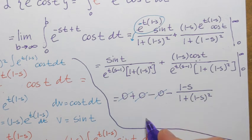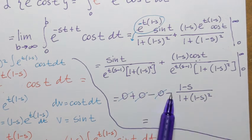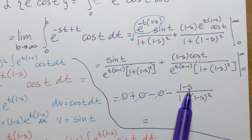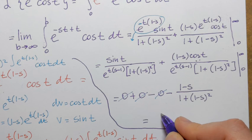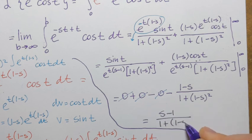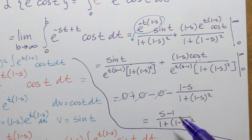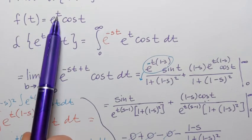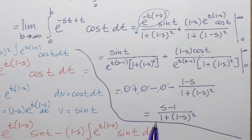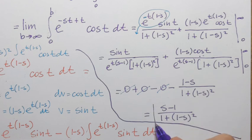To write the final answer cleanly, I apply the negative sign to the numerator — so (1 minus s) becomes (s minus 1) in the numerator, with (1 plus (1 minus s) squared) in the denominator. The Laplace transform of e to the power t times cosine of t is (s minus 1) over (1 plus (1 minus s) squared) — that's the answer in terms of the variable s.